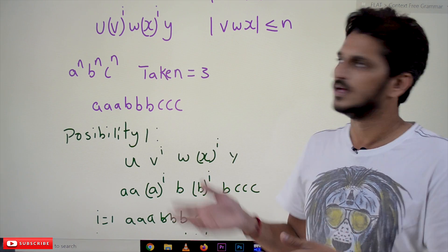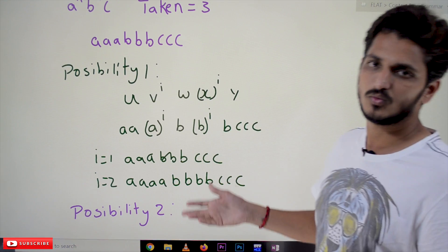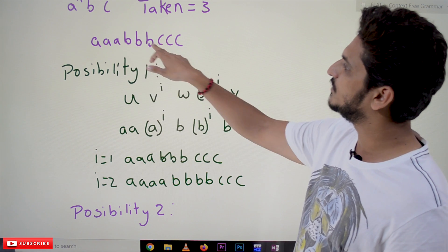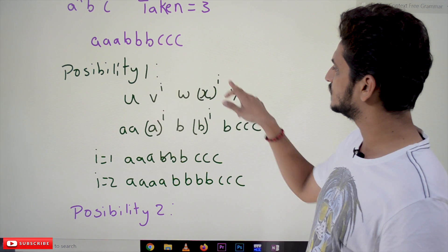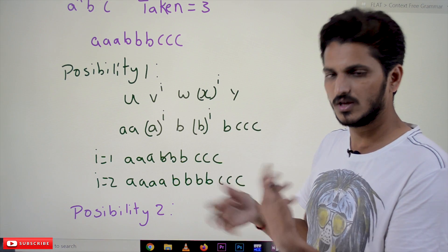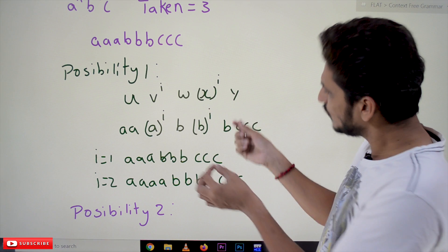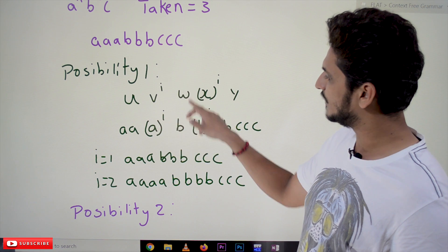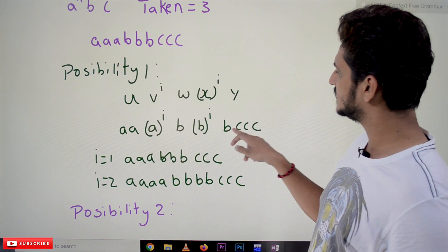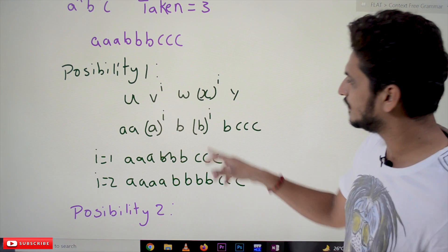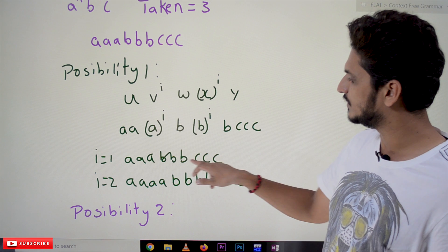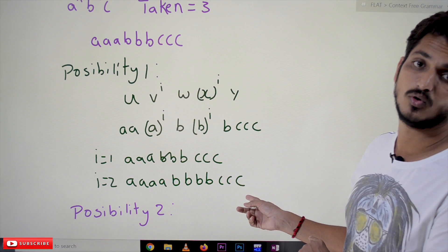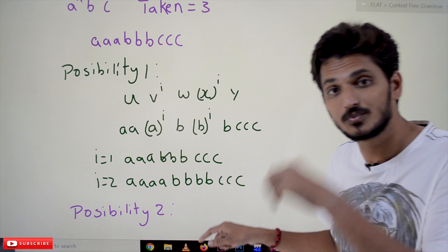We will show two possibilities. Possibility 1: take A A A B B B C C C and divide as U = A A, V = A, W = B, X = A B, Y = B C C C. If we keep on pumping V and X, for i=1 we get A A A B B B C C C. For i=2 we get four A's followed by four B's but still only three C's — this string is not present in our language.